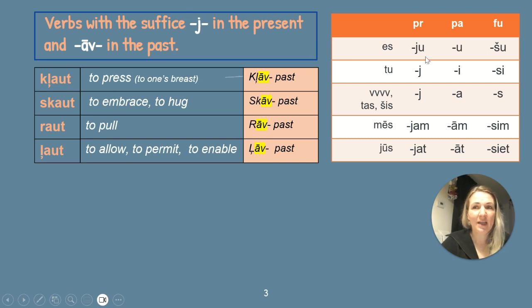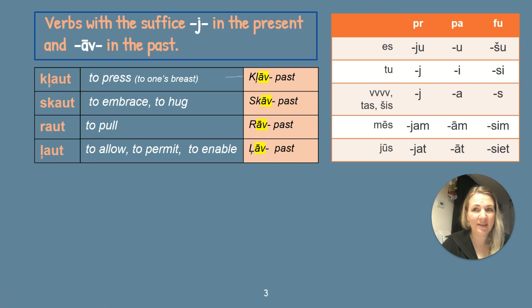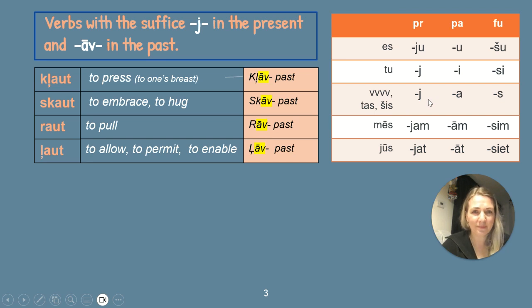In the present form: es klauʒu, es skauʒu, es rauʒu, es ļauʒu. Tu klauʒi, tu skauʒi, tu rauʒi, tu ļauʒi — note the J at the end. Viņš, viņa, viņi, viņas, tas, šis: kļauʒ, skauʒ, rauʒ, ļauʒ. Mēs klauʒam, skauʒam, rauʒam, ļauʒam.